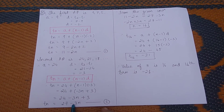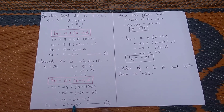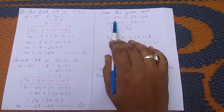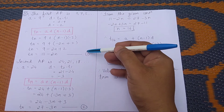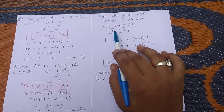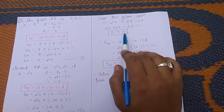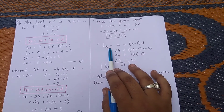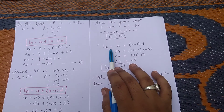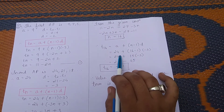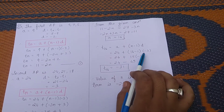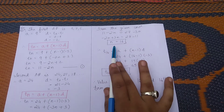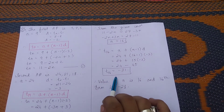For the second AP, a = 24 and d = -3, so tn = 27 - 3n. Setting the two nth terms equal: 11 - 2n = 27 - 3n, giving n = 16. To find the 16th term: t16 = 24 + (16-1)(-3) = 24 - 45 = -21. So n = 16 and the nth term is -21.